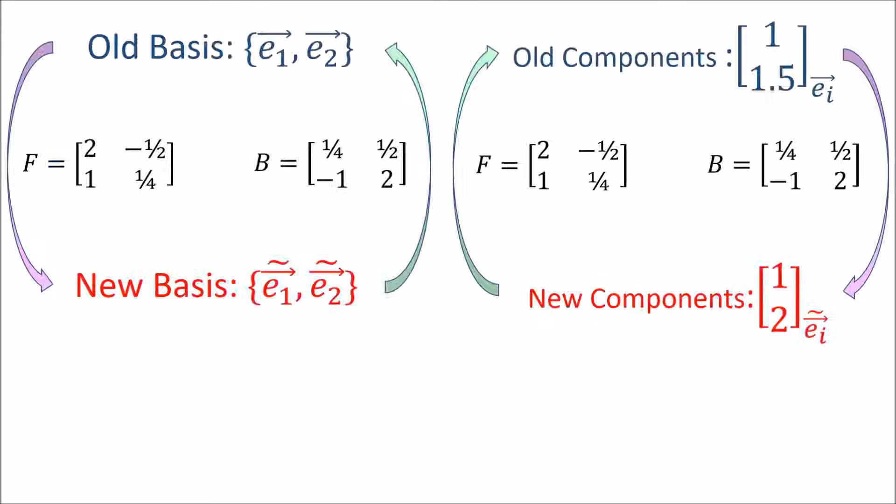So going back to this diagram, when vector components behave the opposite way that basis vectors do, that actually makes perfect sense. When the basis gets bigger, the components will shrink. When the basis rotates one way, the components will rotate the other way. Whatever the basis does, the components do the opposite. So now we have some intuition as to why this sort of opposite behavior happens in 2D.